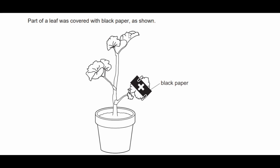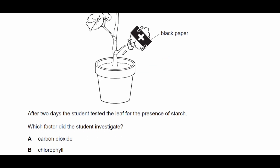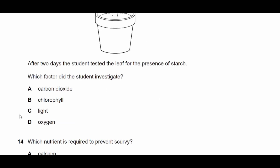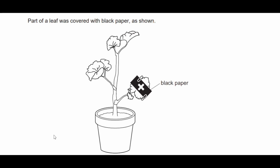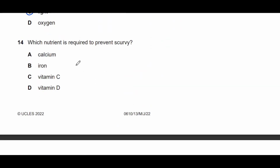Question thirteen: a student covered part of a leaf with black paper. After two days they tested the leaf for starch. Which factor did the student investigate? The student used black paper to compare an area that has light versus an area absent of light. Therefore the factor investigated is light intensity.